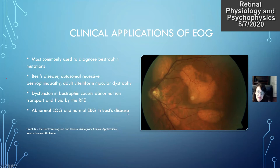This is a classic boards question: Best disease has a normal ERG because the photoreceptors are functioning normally, but an abnormal EOG because of the dysfunction in the RPE.